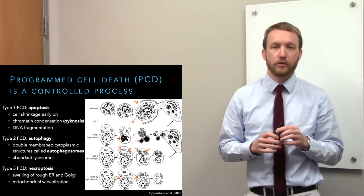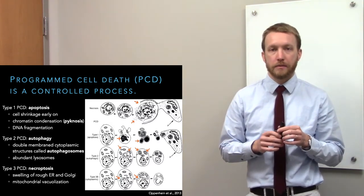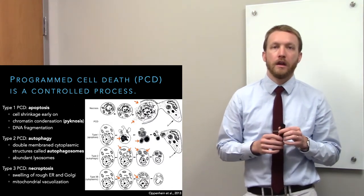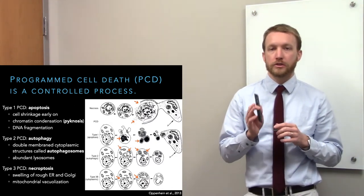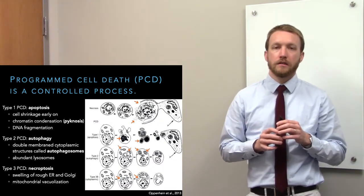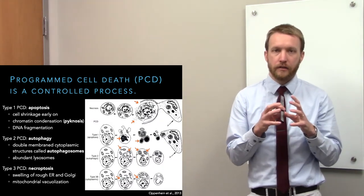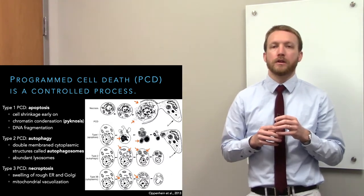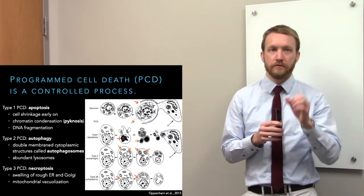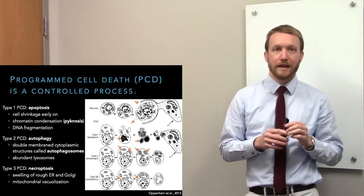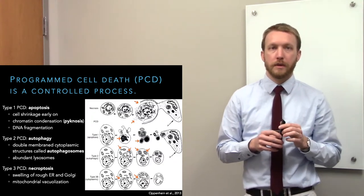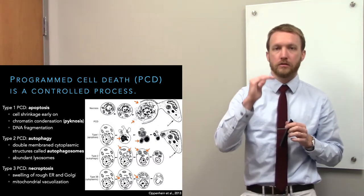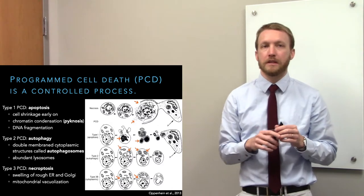There are a few types of programmed cell death. Apoptosis is type 1 programmed cell death. This involves the orderly destruction of the cell by caspases. The cell is going to shrink down as it cuts itself up and compacts its components. We're going to cut up the chromatin so we'll see very condensed nuclei — that's pyknosis. The DNA is going to be fragmented, so if you run it on a gel you'll see DNA laddering as we cut between histones.